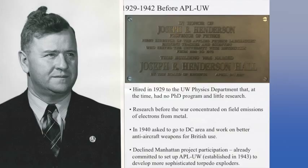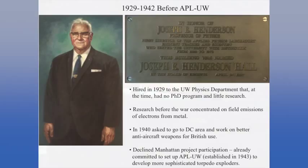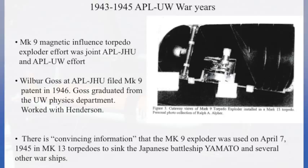In 1940, he was asked to go to D.C. and work on better anti-aircraft weapons to aid the British. While he was there, a guy named Oppenheimer came to him and talked about joining the Manhattan Project, but at the time they couldn't say what it was about. So he declined because he had agreed to establish this university-affiliated lab at the University of Washington. He came back there, and the job given to APL at the time was to help out with problems they were having on torpedo magnetic influence exploders. This effort resulted in what's known as the Mark 9, which was really a joint effort between APL Johns Hopkins and APL-UW. Wilbur Ghos, who eventually filed the patent for the Mark 9, had graduated from the University of Washington Physics Department and had worked with Henderson, so there was a close connection.